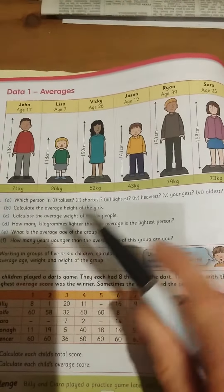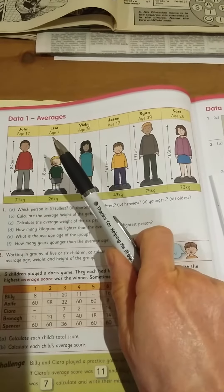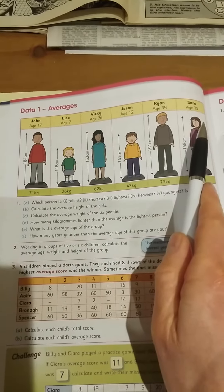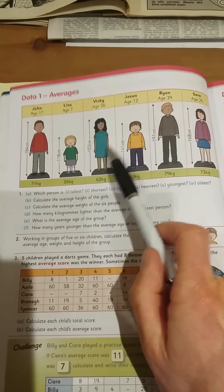Calculate the average height of the girls. So what you're going to have to do is add the height of the girls: Lisa, Vicky, and Sarah. And you're going to divide their height by 1, 2, 3.